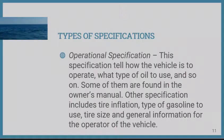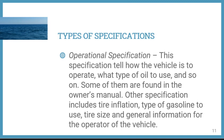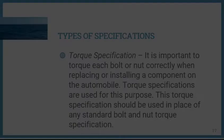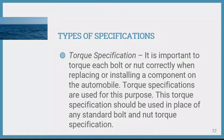There is also the operational specification, which tells how the vehicle is to be operated — what type of oil to use, and so on. Some of these are found in the owner's manual. Other specifications include tire inflation, type of gasoline to use, tire size, and general information for the operator. You also have the torque specification, which is important when replacing or installing components. Torque specifications should be used in place of any standard bolt and nut torque specification.